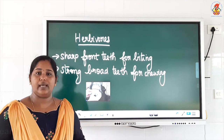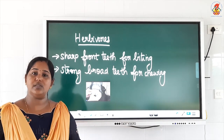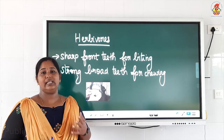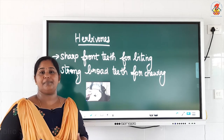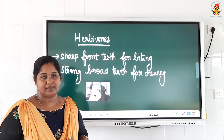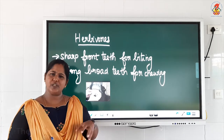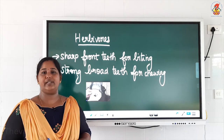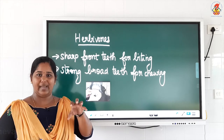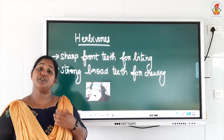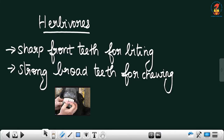The second type of animal is herbivores. You have already studied what herbivores are — they are plant eaters. They eat the leaves or different parts of the plant. Herbivores need to bite the food item, that means bite the leaf, and then chew the food. Here I have shown the picture of the mouth of a cow — the teeth of a cow.